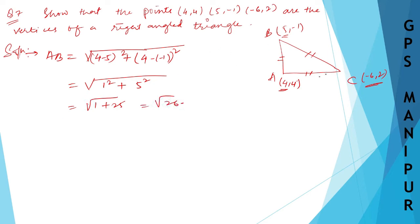Now let us find out BC. BC will be equal to (5 minus minus 6) whole square plus (minus 1 minus 2) whole square. 5 minus into minus is plus, so 5 plus 6 is 11, 11 square plus minus 1 minus 2 is 3, 3 square. Which will be equal to root over 121 plus 9, which equals root over 130.